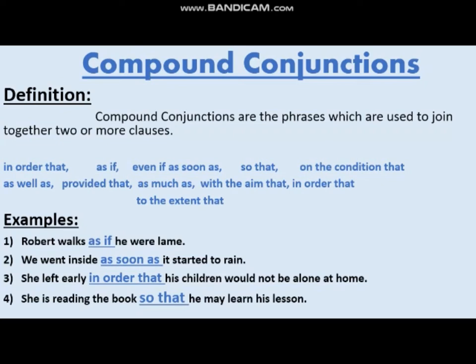Compound conjunctions, also called phrase conjunctions, are formed when two or more words come together to join two or more sentences. 'Robert walks as if he were lame' — 'as if' shows imagination. 'We went inside as soon as it started to rain' — 'as soon as' shows time. 'She left early in order that her children would not be alone at home' — 'in order that' is also a compound conjunction. 'She is reading the book so that he may learn his lessons' — 'so that' shows result or outcome.